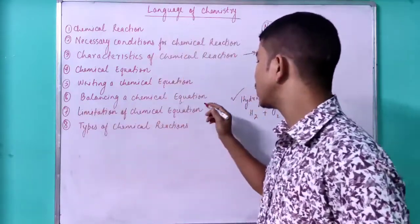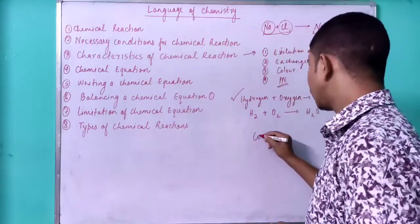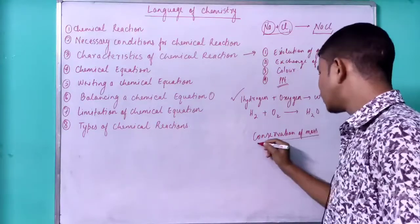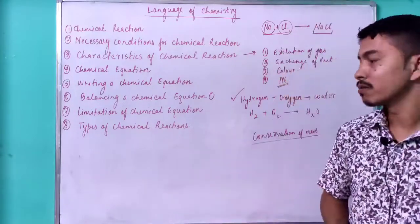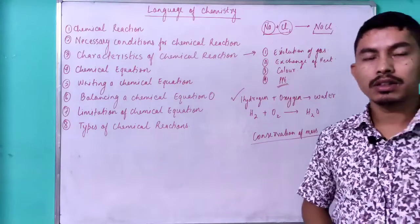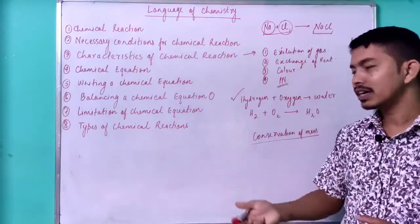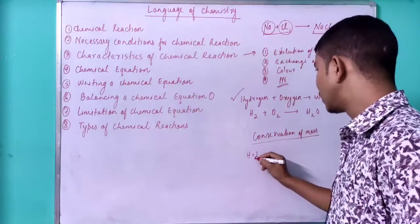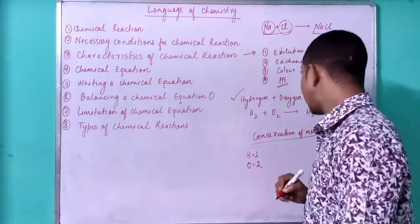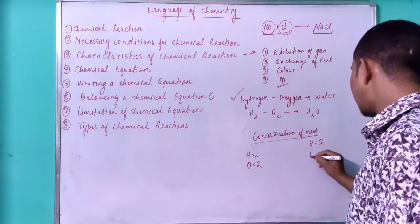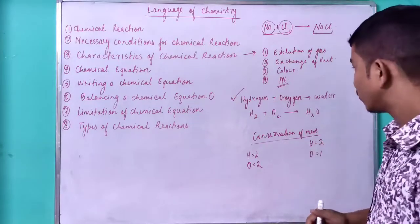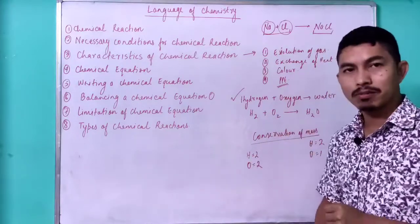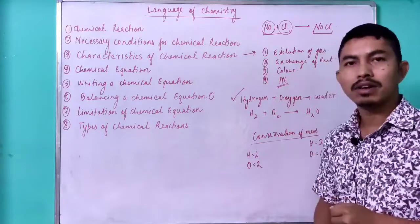Coming to the balancing of the chemical equation — for this you must know the law of conservation of mass. The conservation of mass tells us that mass can neither be created nor destroyed. That is why whenever we write a chemical equation, the number of atoms on both sides — the reactant side and the product side — must be equal. For H₂ + O₂ → H₂O: on the left we have 2 hydrogen and 2 oxygen, but on the right we have 2 hydrogen and only 1 oxygen. Thus it is not balanced. According to conservation of mass, the number of atoms on both sides must be the same, so we must balance the equation.